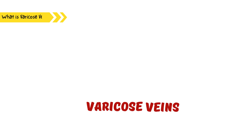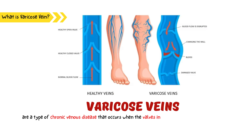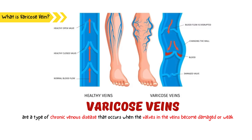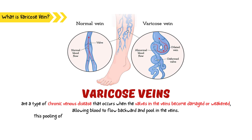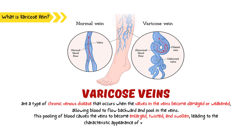Varicose veins are a type of chronic venous disease that occurs when the valves in the veins become damaged or weakened, allowing blood to flow backward and pool in the veins. This pooling of blood causes the veins to become enlarged, twisted, and swollen, leading to the characteristic appearance of varicose veins.